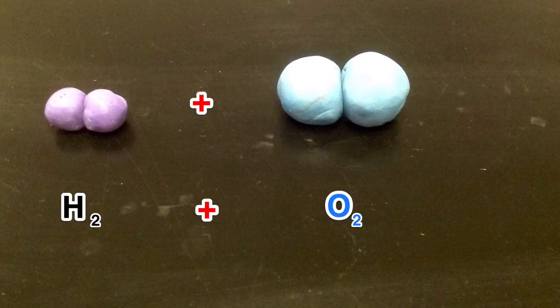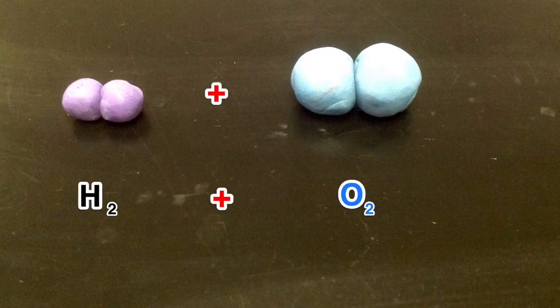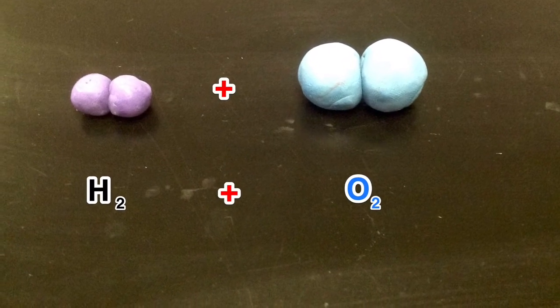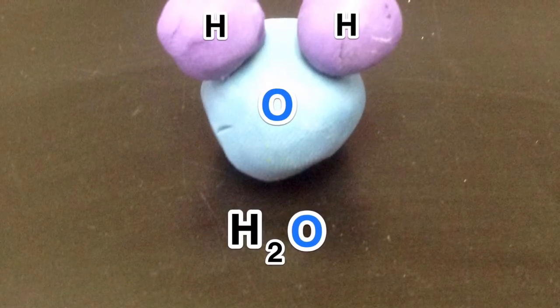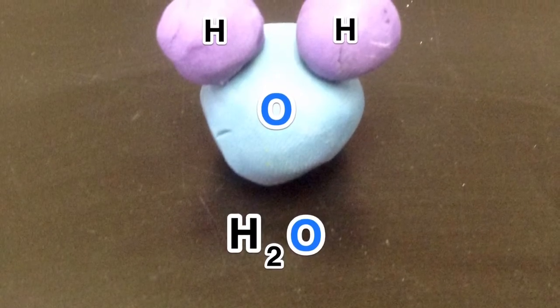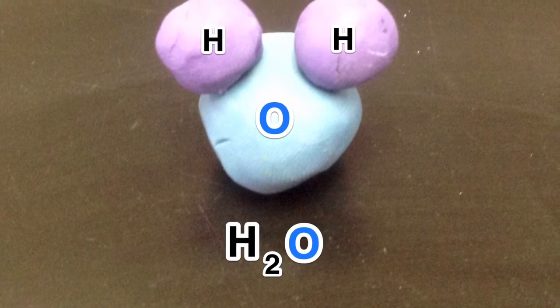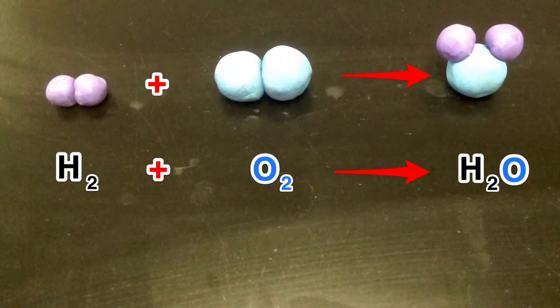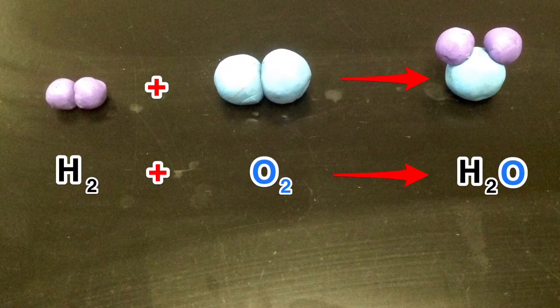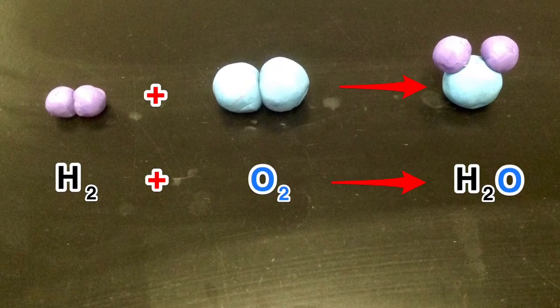Our equation begins with the diatomic hydrogen and the diatomic oxygen becoming H2 plus O2. Hydrogen and oxygen will reconfigure into a molecule of water having two atoms of hydrogen and one atom of oxygen to make H2O. We now have our base equation H2 plus O2 yields H2O, but this is not a balanced equation.